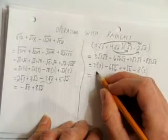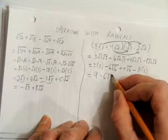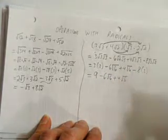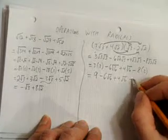3 times 3 is easy, that's just 9. Minus 6 root 6, plus 4 root 6. Oh, could have combined those, I'll do that on the next step. Minus 8 times 2, that's minus 16.